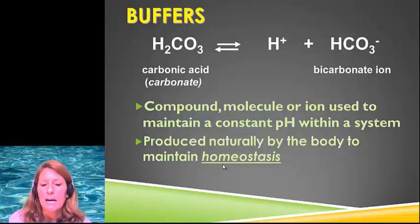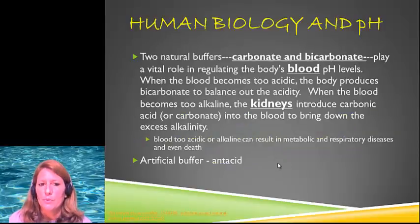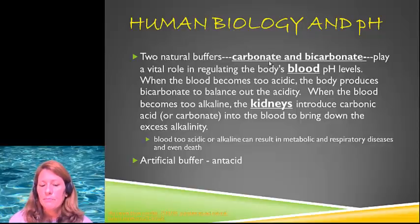Okay, so what does the pH have to do with the human body? Well, in our body there are two natural buffers. There's the carbonate, which was the molecule that we saw on the left, and the bicarbonate, the ion, okay. And so one example is in our blood. We need to maintain homeostasis in our blood. So if it becomes too acidic, then the body is going to release bicarbonate to help reduce the acidity. If it becomes too alkaline or basic, then the kidneys kick in and then it's going to release carbonate or carbonic acid and it's going to bring that level back down to normal.